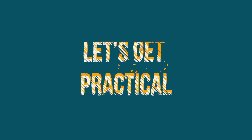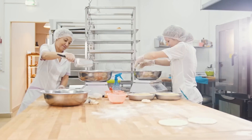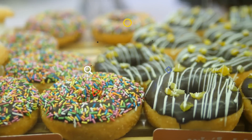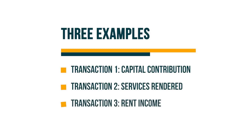Let's get practical. We'll be using a business that you covered in Term 1, Bake at Brenda, to explain the accounting equation. Do you remember Brenda? She opened up her own bakery. If you forgot, you can go back to Term 1's lesson. Let's look at a few examples of the effects of transactions on the accounting equation — including capital contribution, services rendered, and rent income.